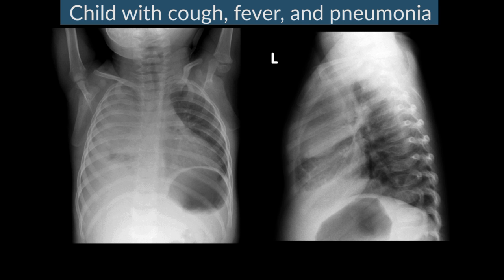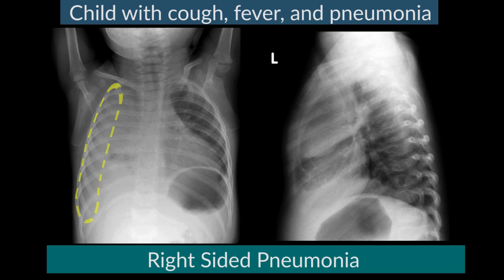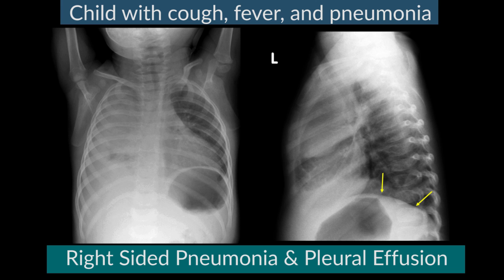Another child presents with cough and fever and has a right-sided pneumonia. The lung density is markedly different on the right side compared to the left. The lung can only be seen in the medial aspect of the right hemithorax, and pleural fluid is accounting for the density lateral to the chest. On the lateral film, we can only see one hemidiaphragm, suggesting that this child has a pleural effusion in addition to the pneumonia.